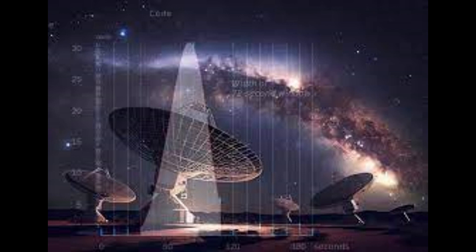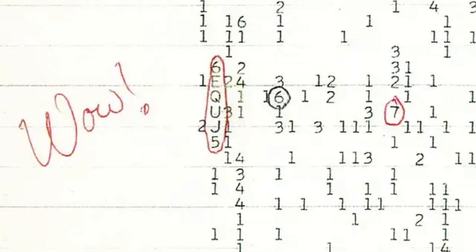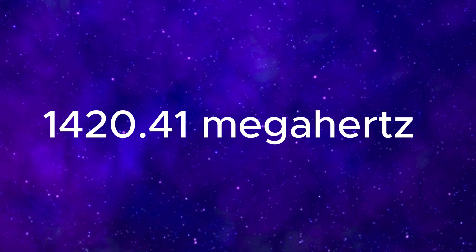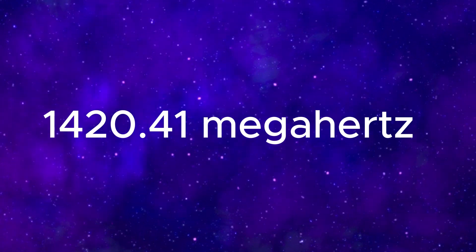The signal's intensity was 30 times greater than the background noise, sparking intrigue among researchers. It was dubbed the WOW signal due to the astonishment it evoked. The signal's frequency, approximately 1420.41 MHz, is significant. It corresponds to the natural emission frequency of hydrogen, the most abundant element in the universe.